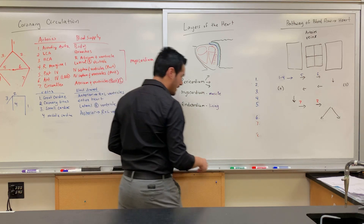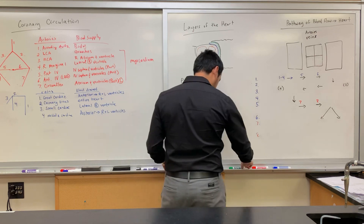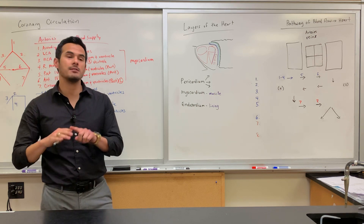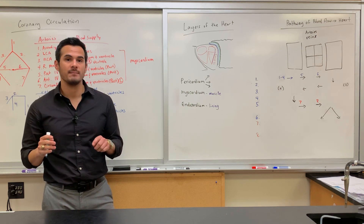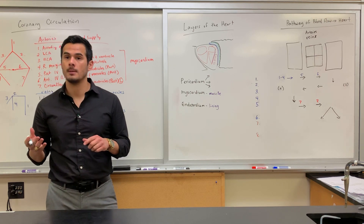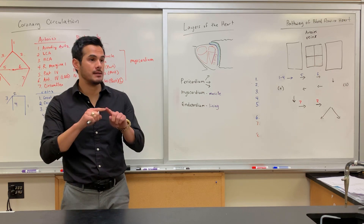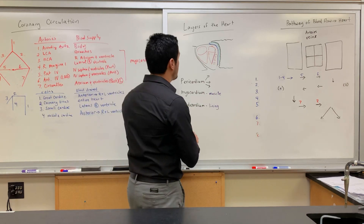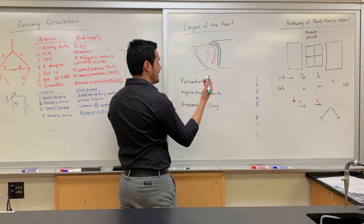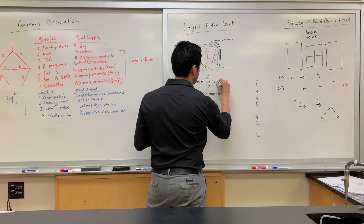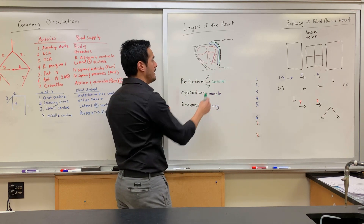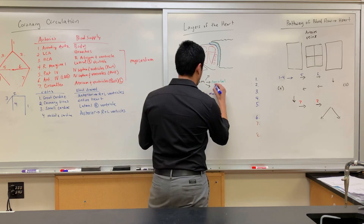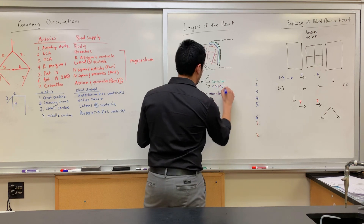The pericardium is divided into a couple of different layers. The parietal layer lines the body cavity, and the visceral layer is what's directly on top of the organ itself. So the parietal pericardium is the outer layer, and the visceral pericardium is the layer directly on the heart.